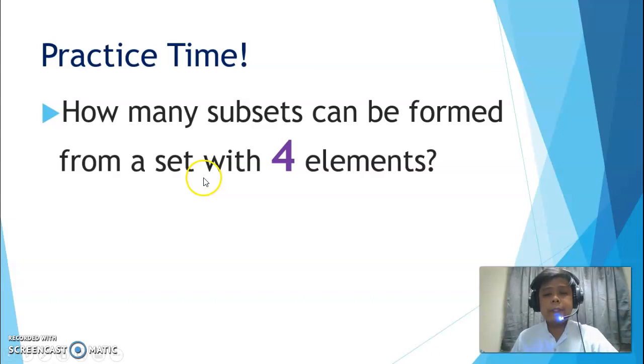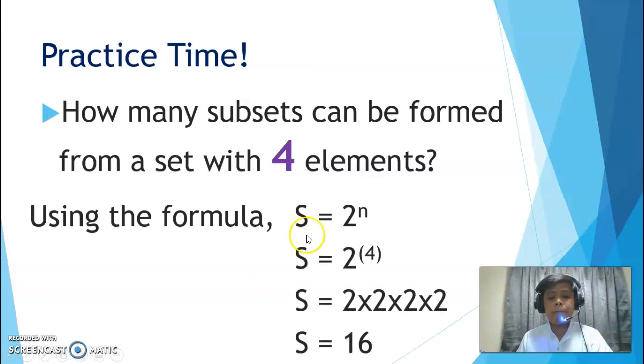Practice. How many subsets can be formed from a set with 4 elements? How many subsets can be formed from a set that has 4 elements? So, using the formula. This is it. The N, let's just replace it with how many elements, or 4. So, it means we have 4 twos to multiply. 2 times 2, 4. Times 2, 8. Times 2, 16. So, we have 16 subsets.